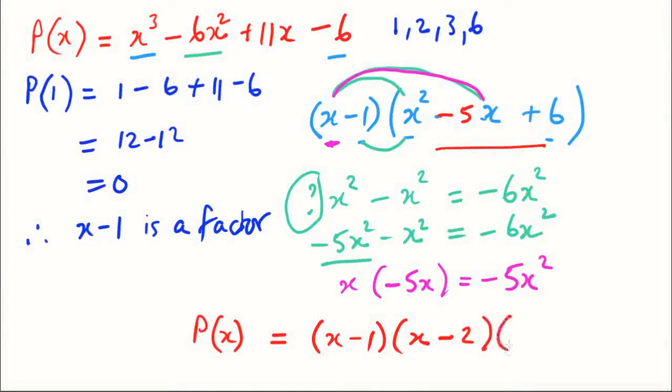We have factorized the cubic function by initially using the factor theorem which gives us our first factor, and then we use this short method to find the other two factors, much quicker than long division. And I highly recommend you year 12 students and possibly year 11s if you're looking at this, practice this until you can do it. It's going to save you a lot of time.